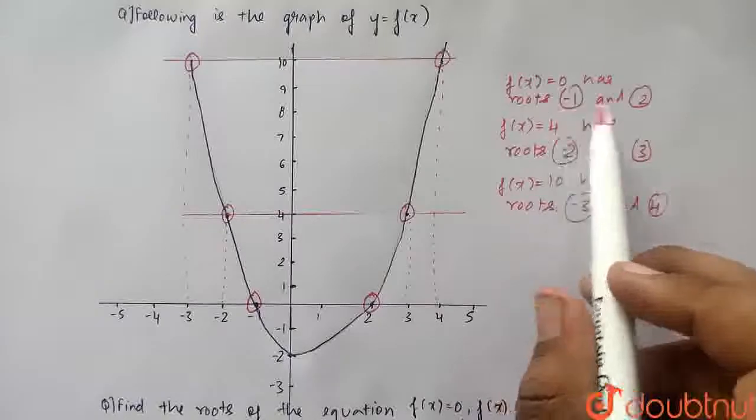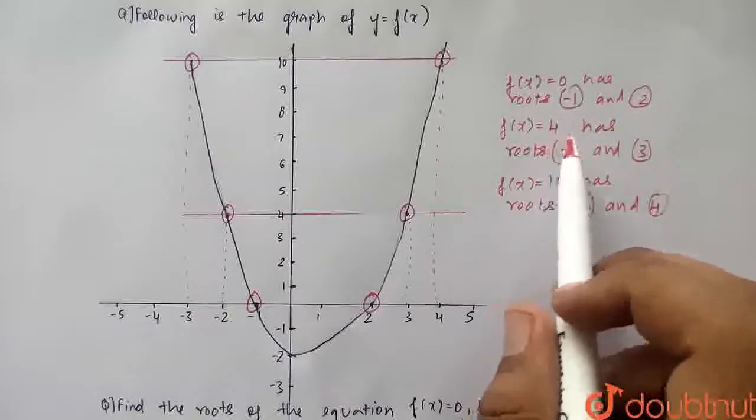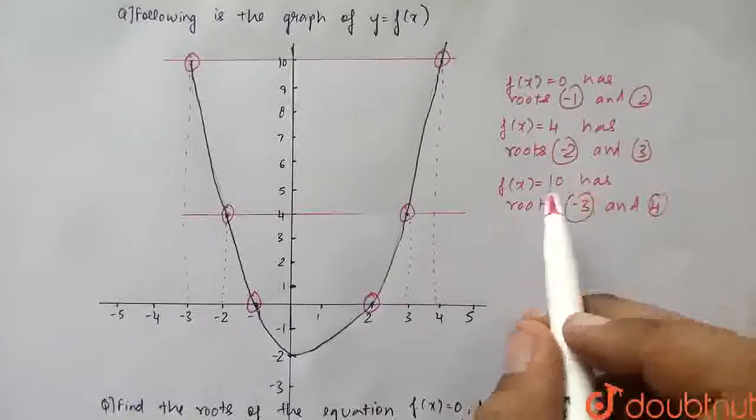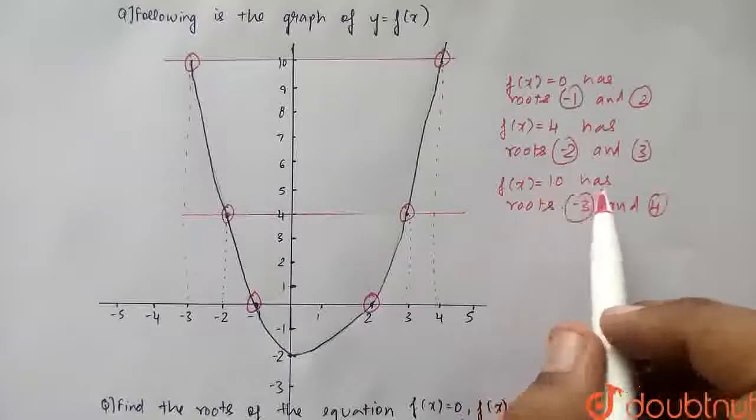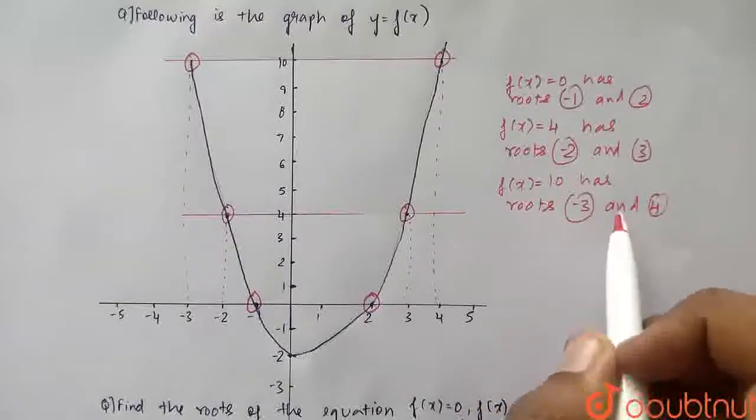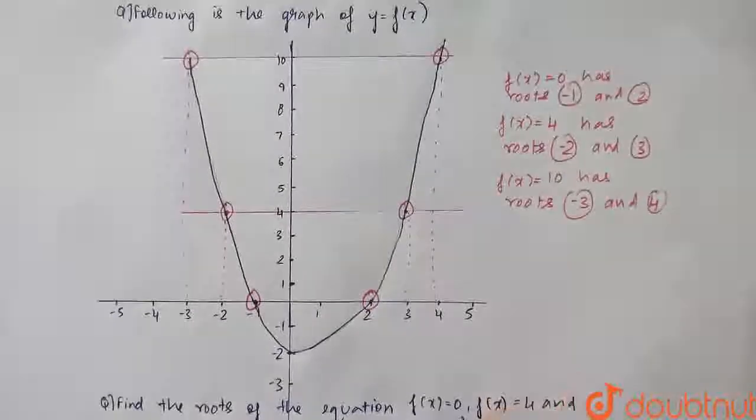That is, f of x is equals to 0, has roots minus 1 and 2, is equals to 4, has minus 2 and 3, and similarly, f of x is equals to 10, has minus 3 and 4 as the roots. These are the final answer for this question, students. Thank you so much.